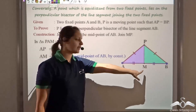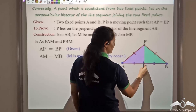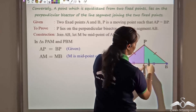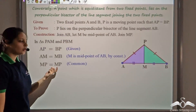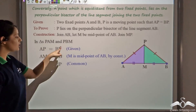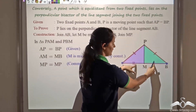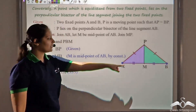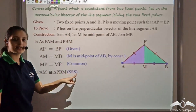We had drawn M such that it was the midpoint of AB. So I have three pairs of sides: side, side, side. I can say that triangle PAM is congruent to triangle PBM by SSS — side, side, side. Once the triangles are congruent, the corresponding parts of these triangles will also be congruent.